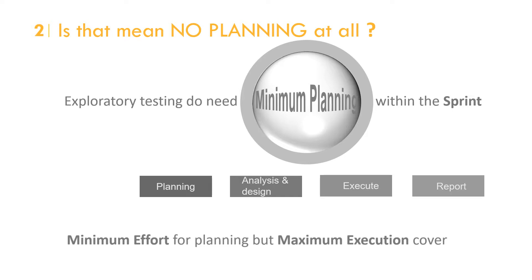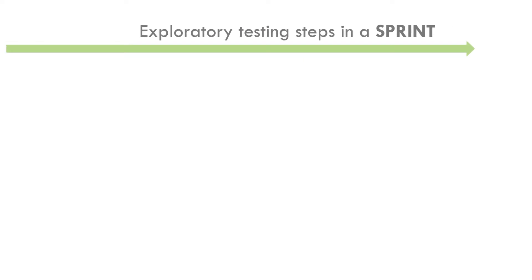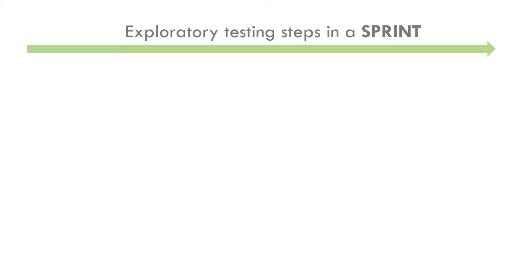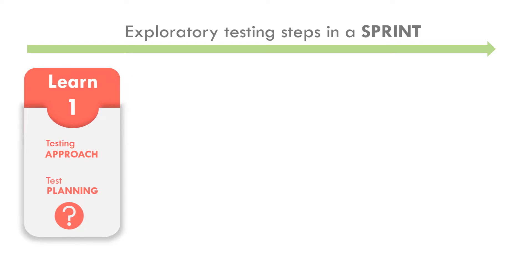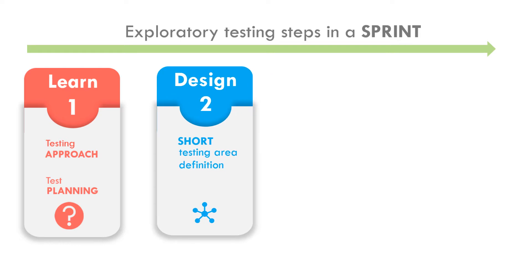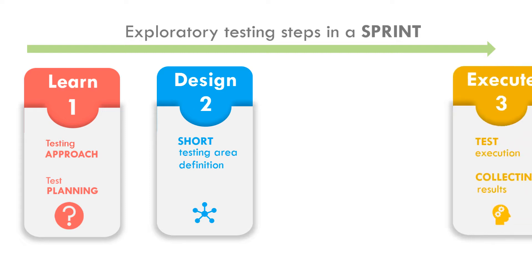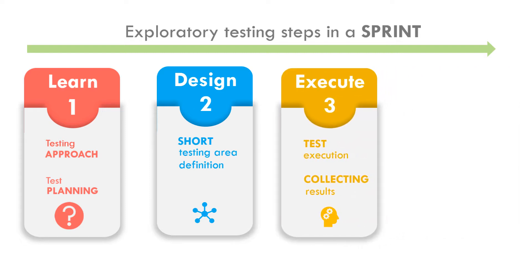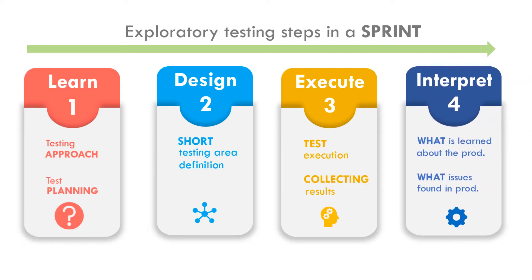So what do we do for exploratory testing? We first learn the application, find out testing approaches — what to test, how to test, how to find out the problem. Then we do a short design where we write down short descriptions about what we are going to test. Then we execute the test cases, collect results, and finally interpret our learning about the product and the issues found during execution.